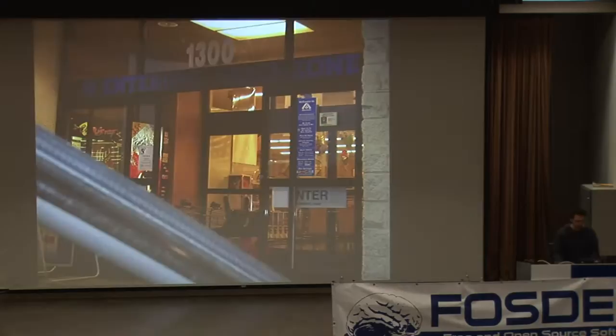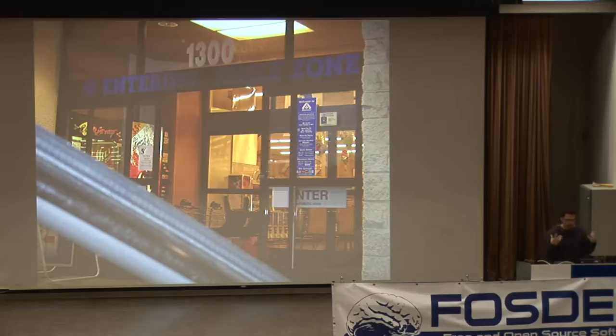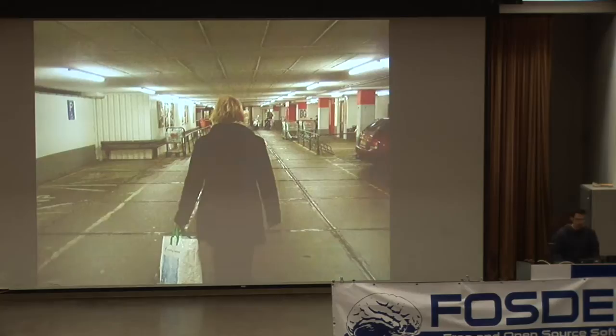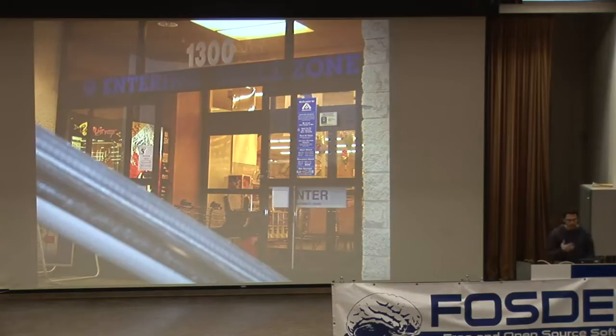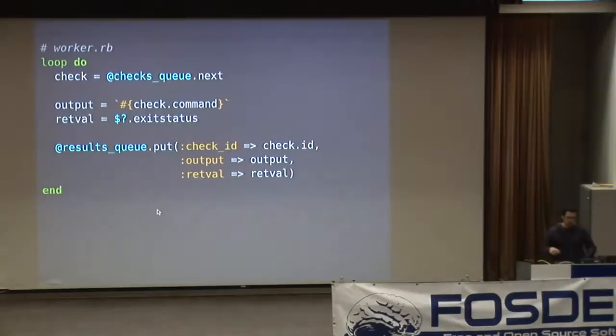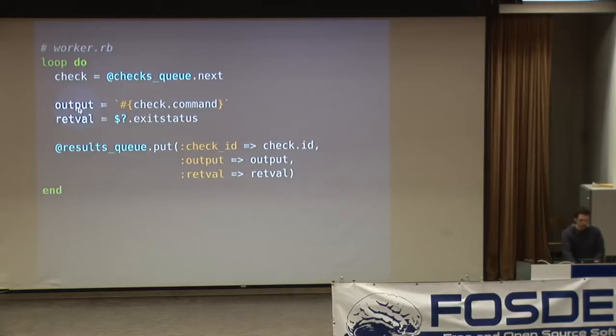I like to describe the Flapjack worker using the story of the eternally forgetful shopper. The shopper goes into the shop, finds the thing he wants, goes to checkout, pays, and going back to his car thinks 'oh crap, I forgot something,' so he goes back in again and again. This is the way Flapjack workers work: the worker is in a gigantic loop saying 'give me the next check I need to do something with,' then it executes that check and captures the output and return code.